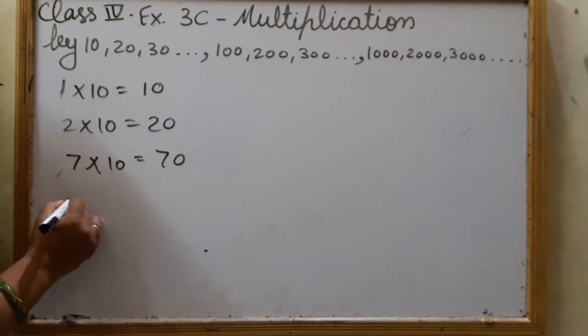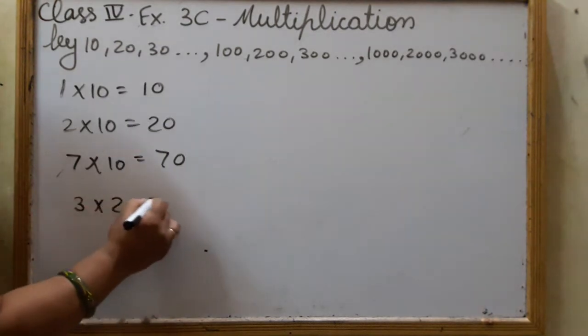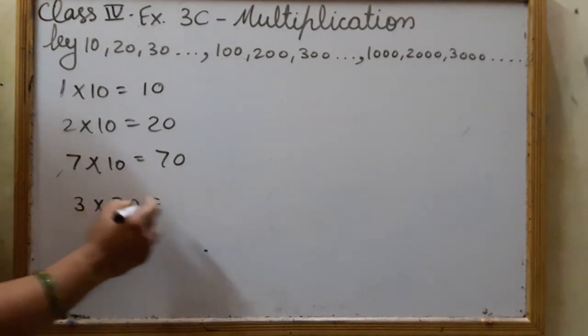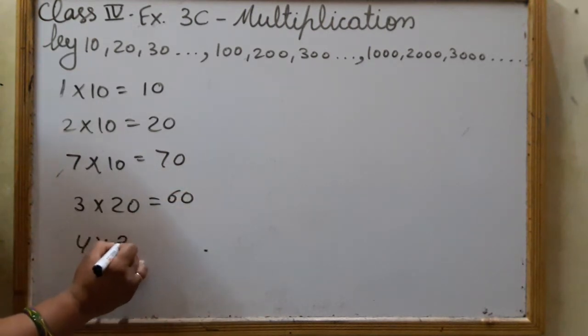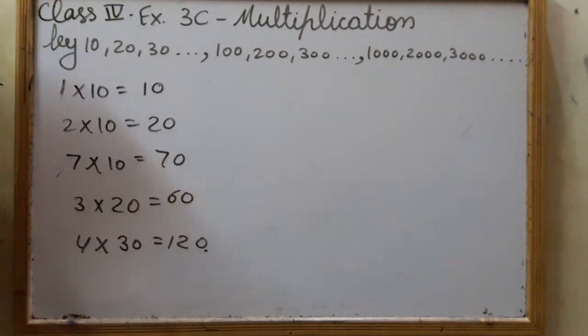And in the same way, if there are 3 into 20, it's 3 2s are 6 and 60. 4 into 30 equals 3 4s, 120.